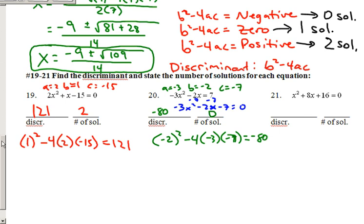And last but not least in this one, a equals 1, b equals 8, c equals 16. So we have 8 squared minus 4 times 1 times 16. That gives us zero. Discriminant is zero. Number of solutions is 1.